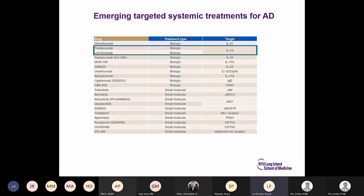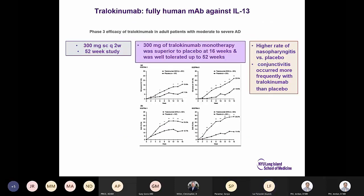Moving now to emerging targeted systemic therapies beyond IL-4 receptor alpha. Tralokinumab is a fully human antibody against IL-13, shown to be superior to placebo at 300 mg subcutaneously every two weeks. It had a higher rate of nasopharyngitis than placebo, and conjunctivitis still occurred more frequently with tralokinumab than placebo.